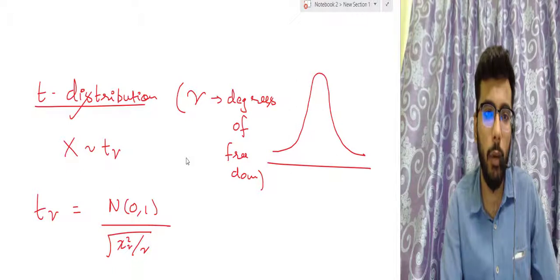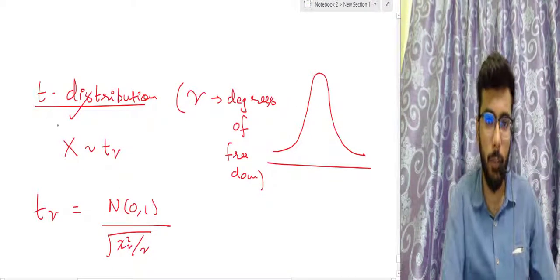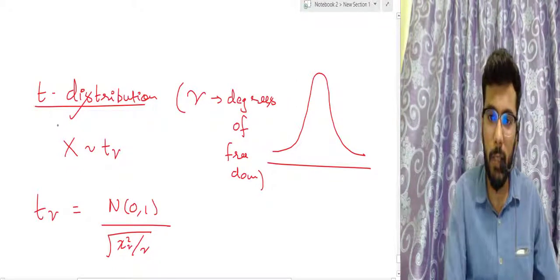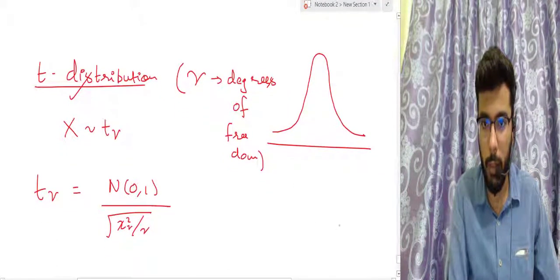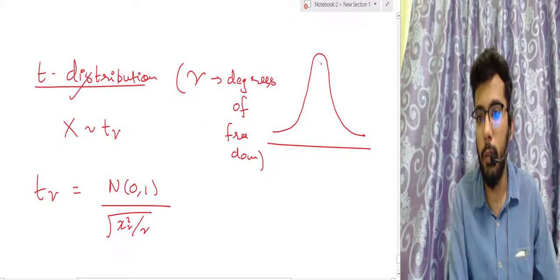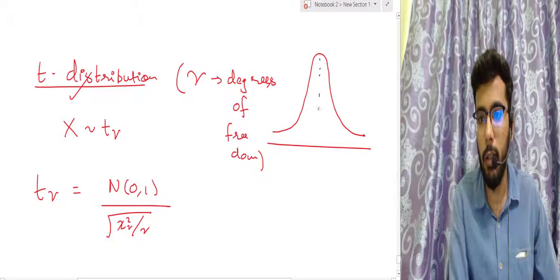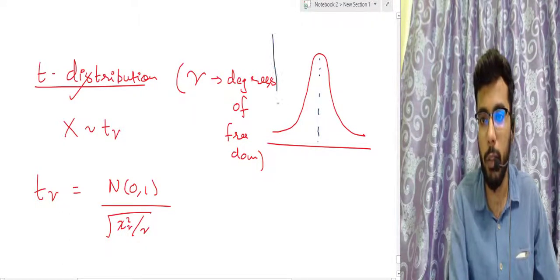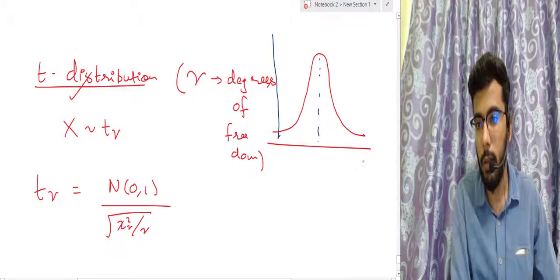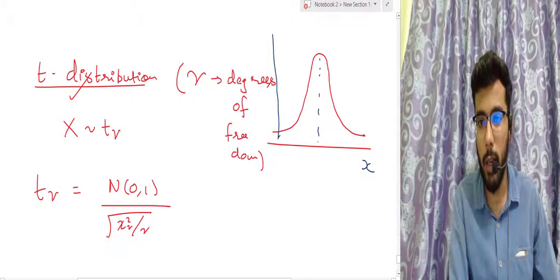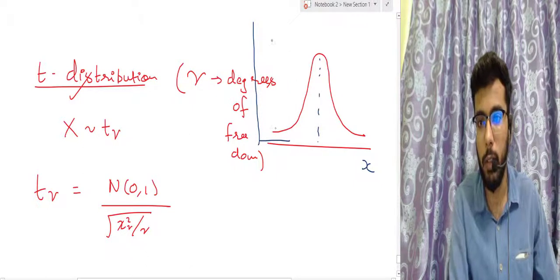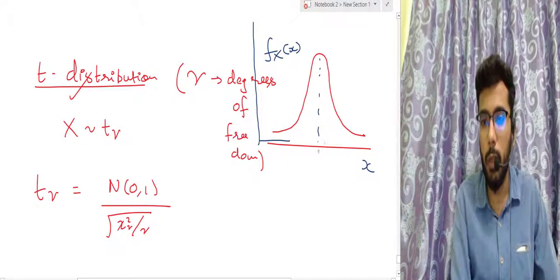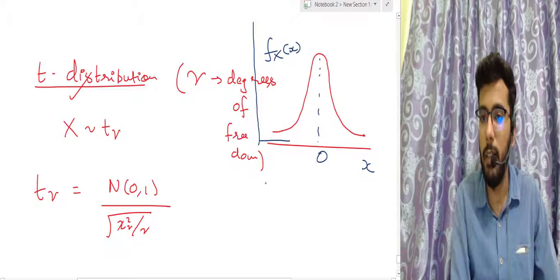The next thing is the T distribution, which is basically related to a lot of distributions we have already studied. The probability function looks like this — this is your X and this is your probability F(x). This is what the T distribution looks like, and it has its mean at zero.